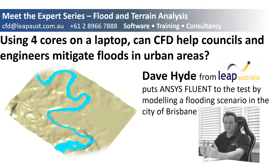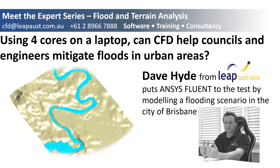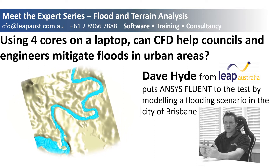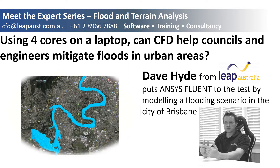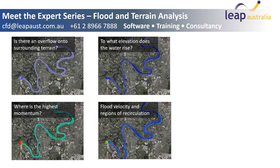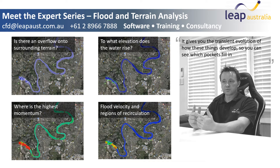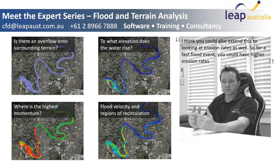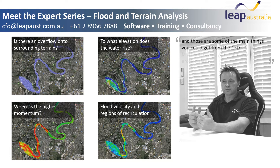Thank you for joining us. It gives you the transient evolution of how these things develop, so you can see which pockets fill in, and you start to get an idea of timing for when flow begins to abate in certain areas and how it propagates. You could also extend this to looking at erosion rates — for a fast flood event you could have higher erosion rates. Those are some of the main things you can get from the CFD.